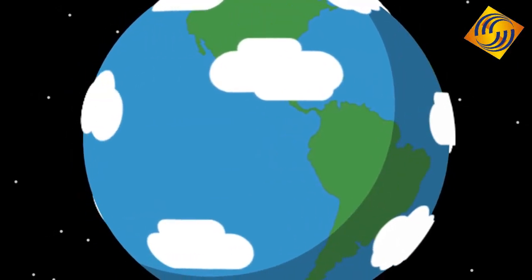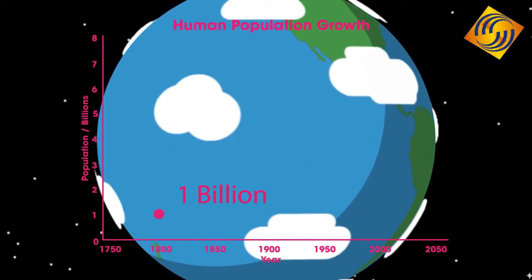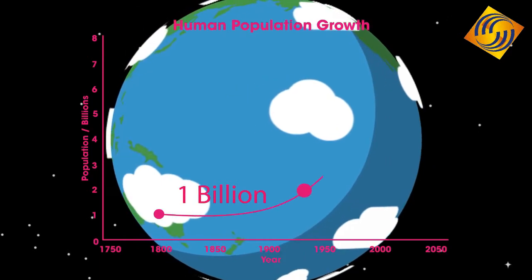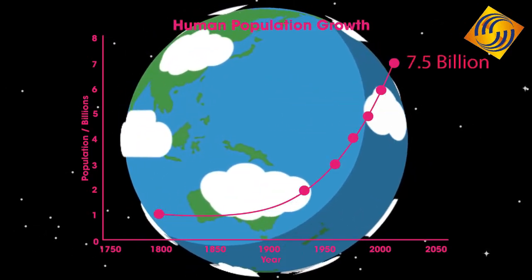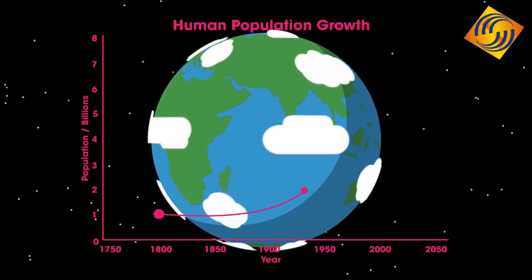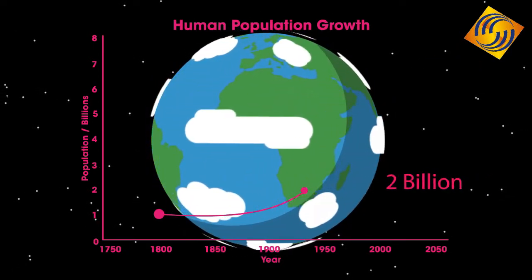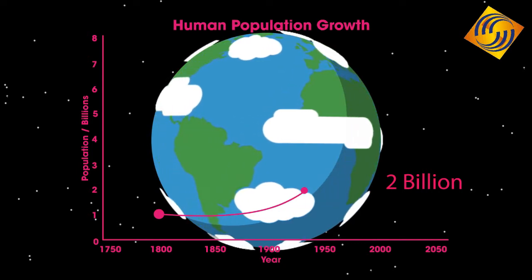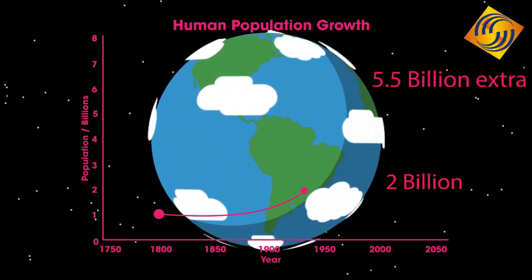It took hundreds of thousands of years for the human population to reach 1 billion, and in less than 200 years that has increased to nearly 7.5 billion people. Many scientists calculate the sustainable population to be about 2 billion people, which means we need to manage our resources and food production very carefully to cater to the extra 5.5 billion people.